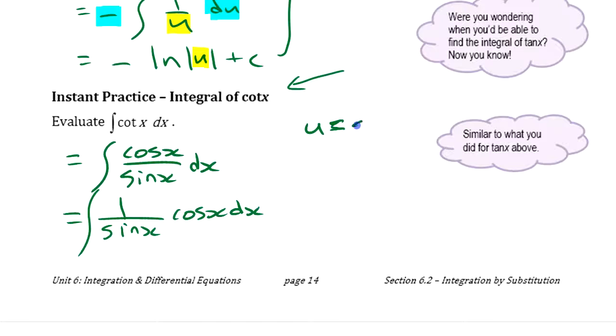This is where we decide what to make into u. u is going to be sine x, so du equals cos x dx. We can make those changes: cos x dx becomes du, and sine x becomes u.